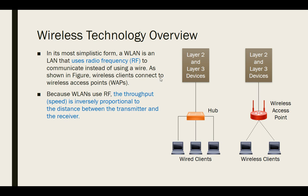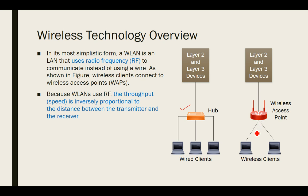Now we will discuss a wireless technology overview. Wireless LAN works on radio frequencies, and you need to be in range to access its services. As shown in the figure, there are two networks: the first has a hub connected to wired clients through wires, and the second uses a wireless access point with no wires — clients can access services provided by the access point from anywhere within range.